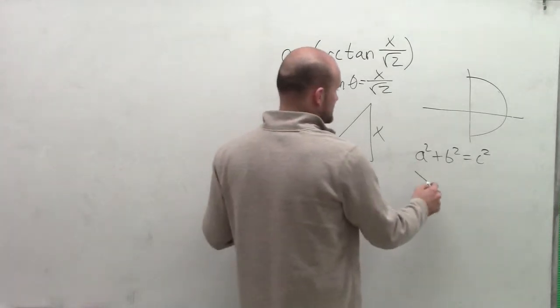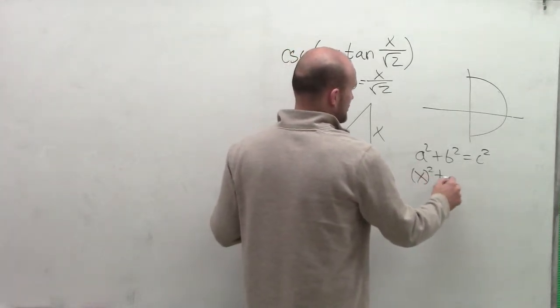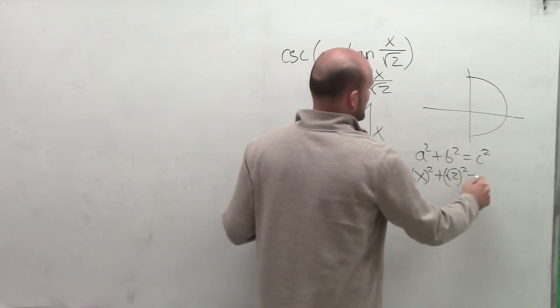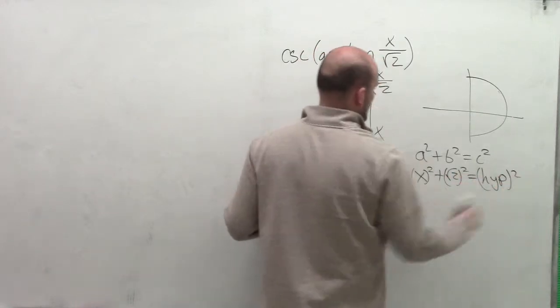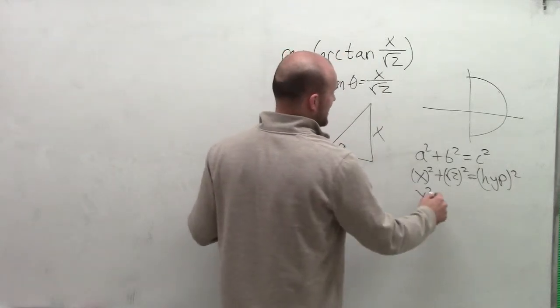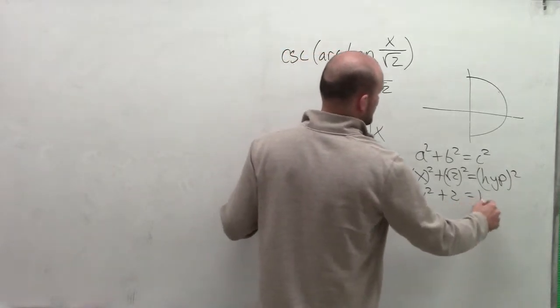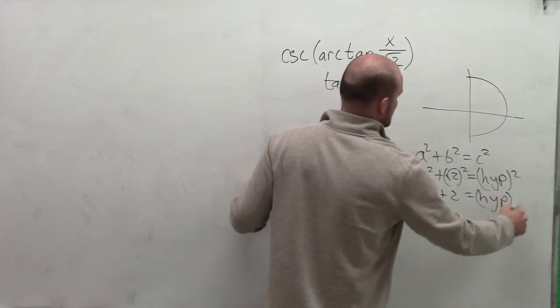Well, here's my two legs. So I can say x squared plus the square root of 2 squared equals my hypotenuse squared. Therefore, I have x squared plus 2 equals my hypotenuse squared.